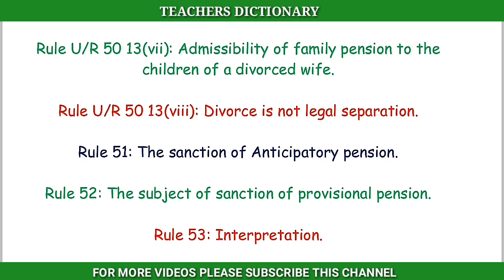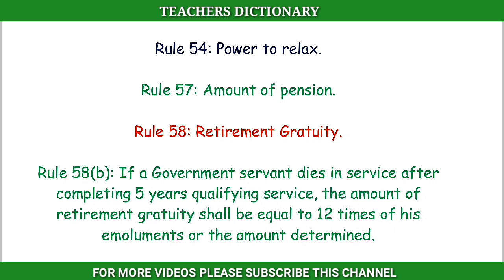Rule 54: Power to Relax. Rule 57: Amount of Pension. Rule 58: Retirement Gratuity — if a government servant dies in service after completing 5 years of qualifying service, the amount of retirement gratuity shall be equal to 12 times of his emoluments or the amount determined.